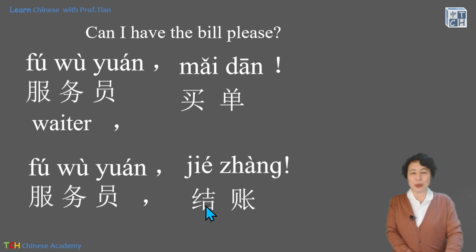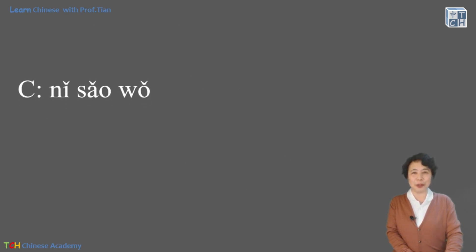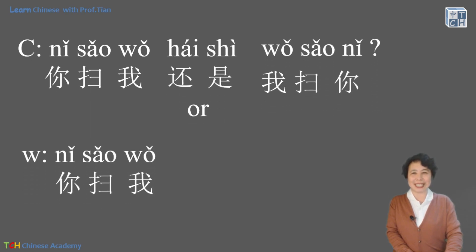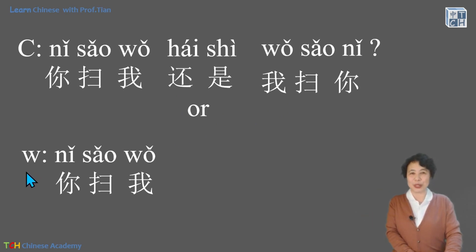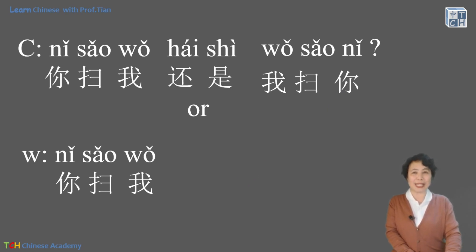When the waiter or waitress comes, we can have the following conversation. You are the customer — you can start. The waiter may ask: 你扫我还是我扫你? That means 'you scan me or I scan you?' because there are two ways to pay. And the waiter or waitress can say 你扫我, or of course 我扫你, depending on the situation. That is how we buy the bill and pay in China.